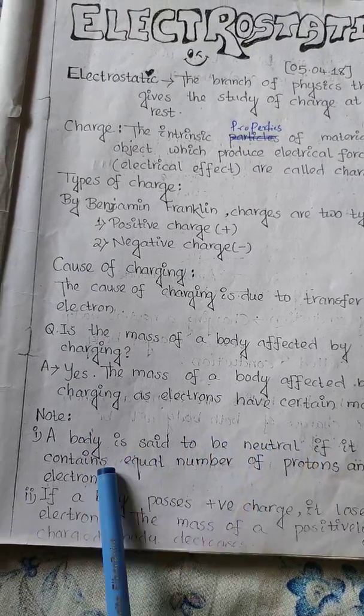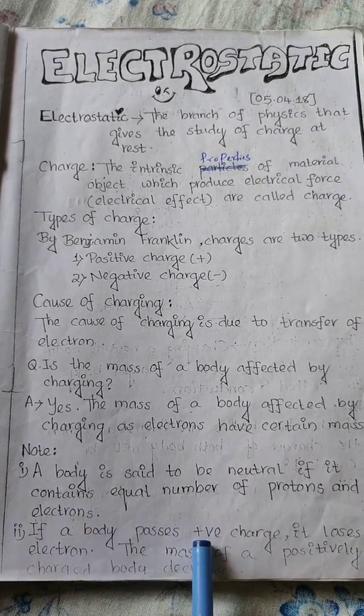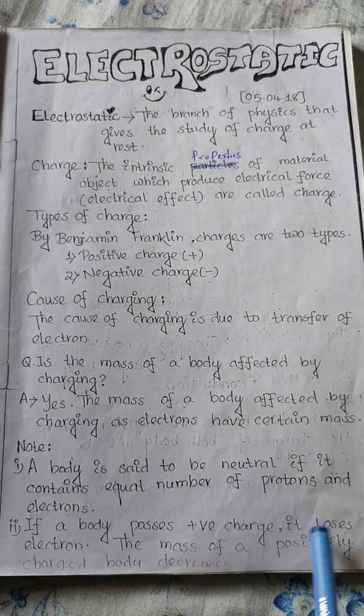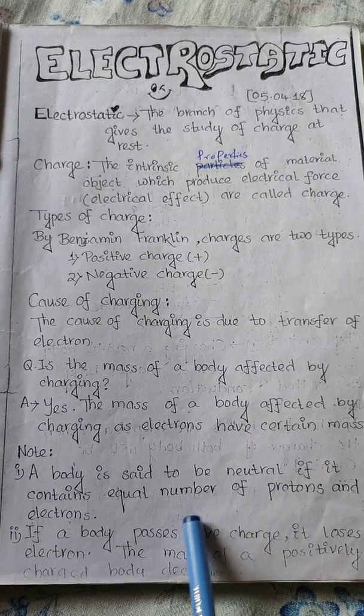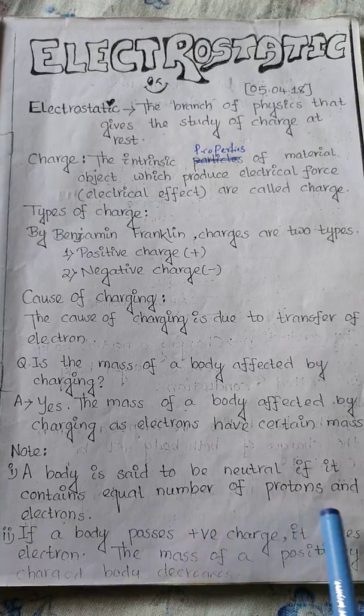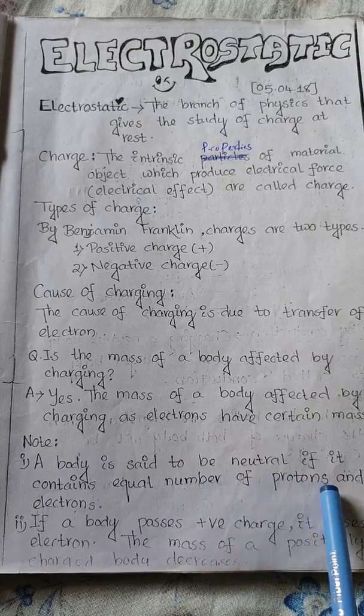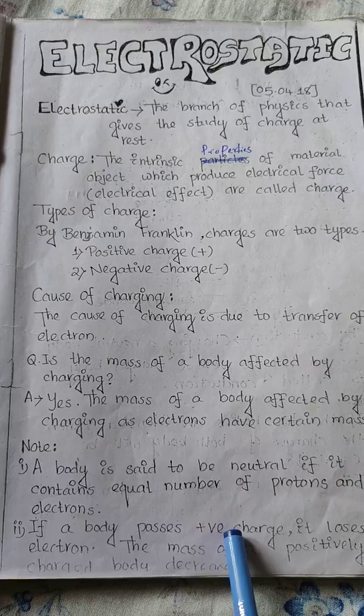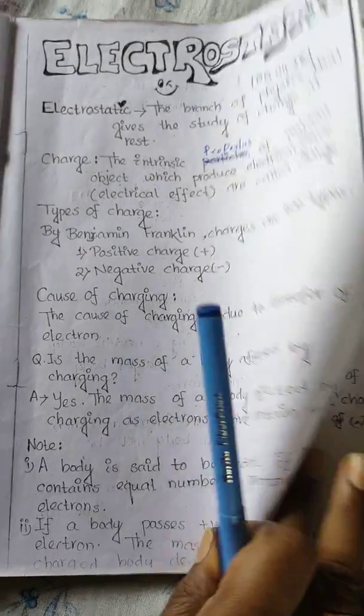If a body has a positive charge, it means electrons are lost. So the mass decreases. When a body has a positive charge, it means electrons are lost. The number of protons remains the same, but electrons decrease. Since protons are positive and electrons are negative, the overall charge becomes positive.